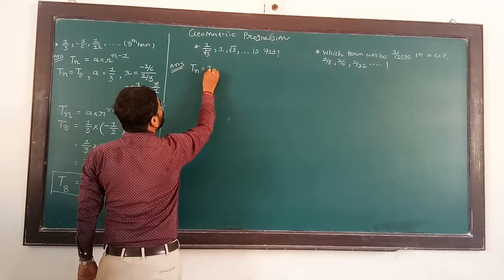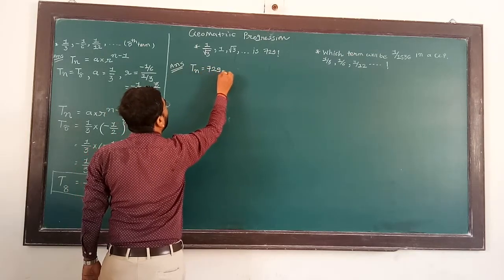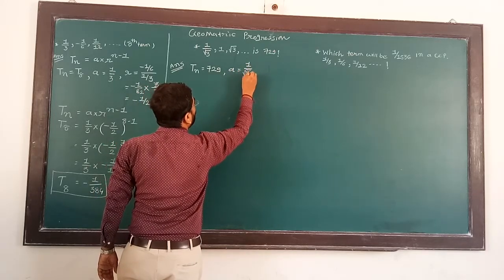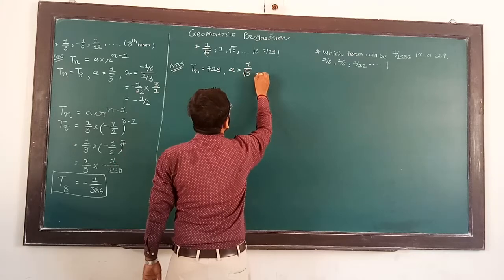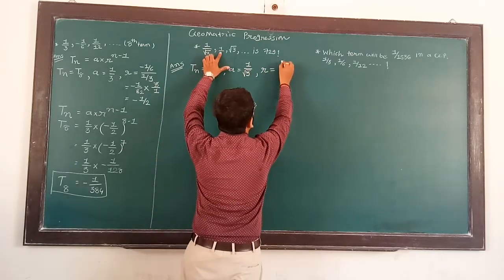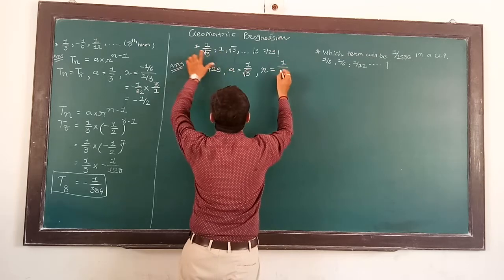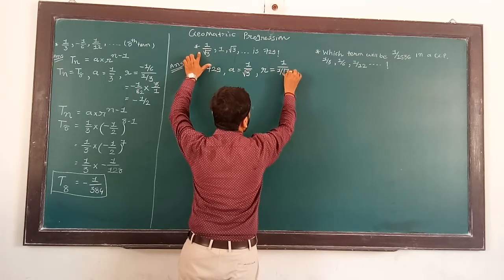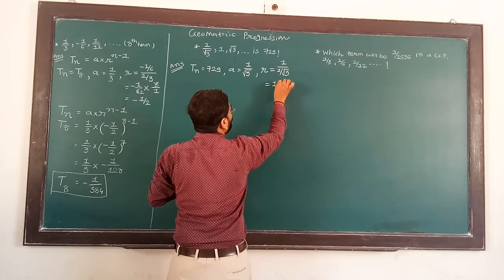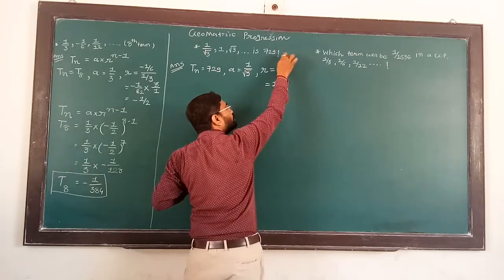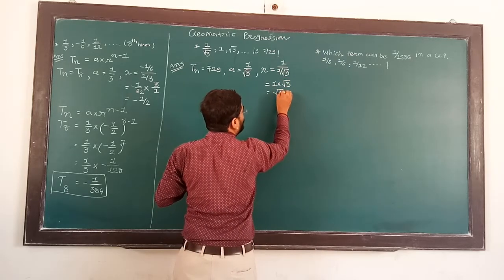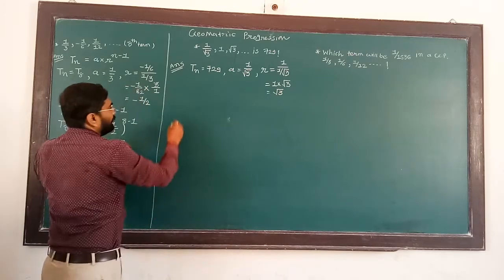For the next problem, N is equal to 729. Here A is equal to 1 upon root 3 and R is equal to second term upon first term. So 1 into root 3 gives R is equal to root 3.